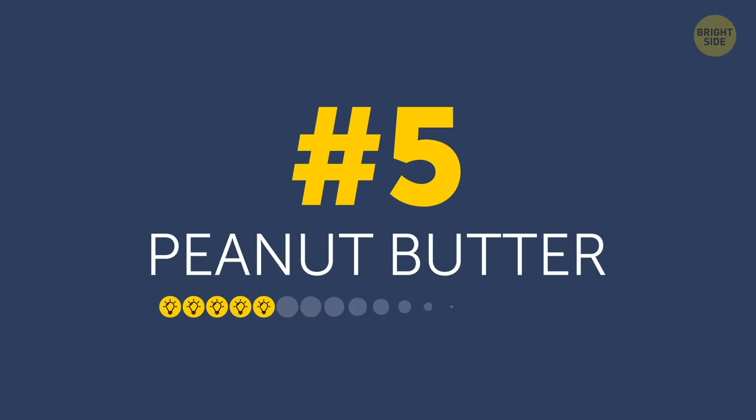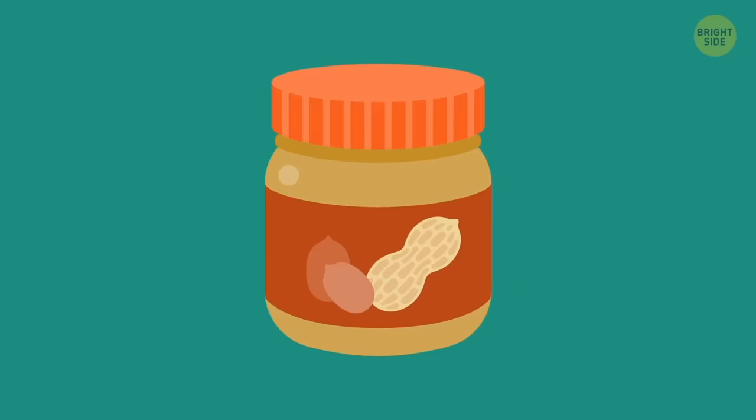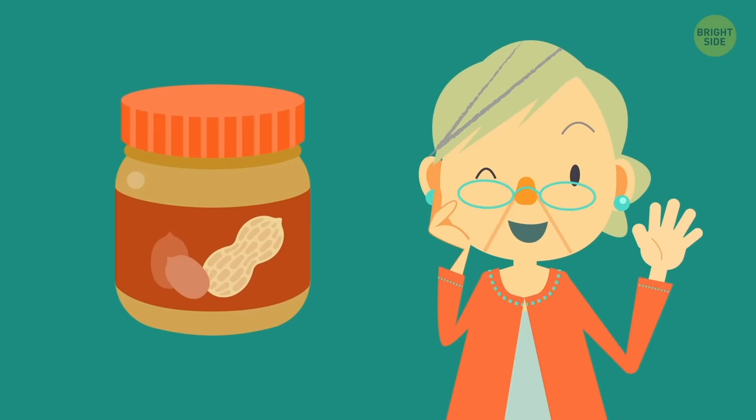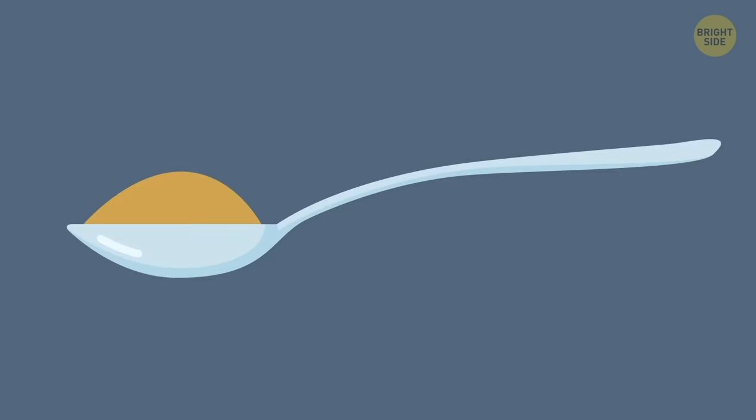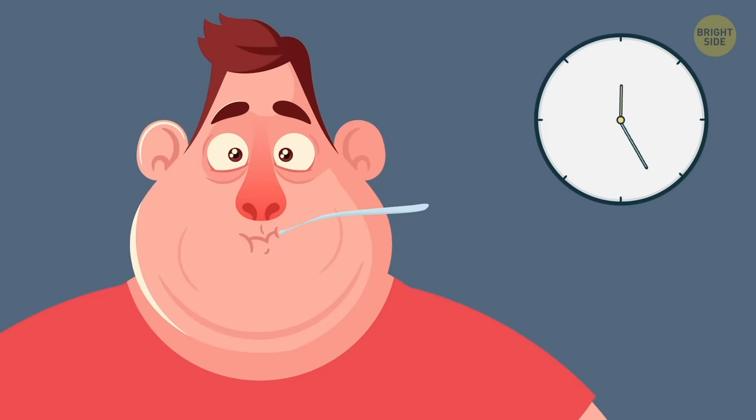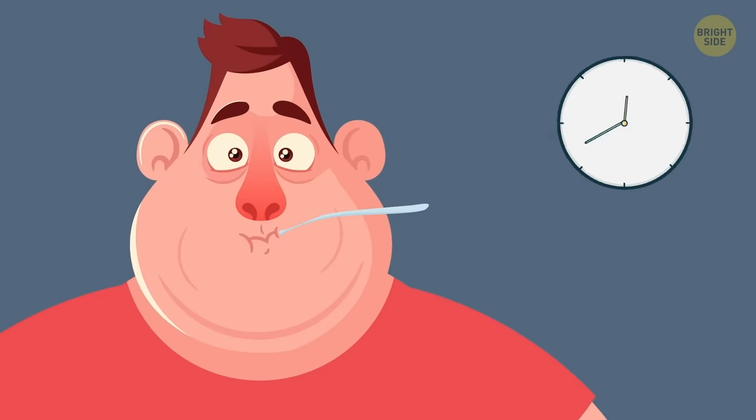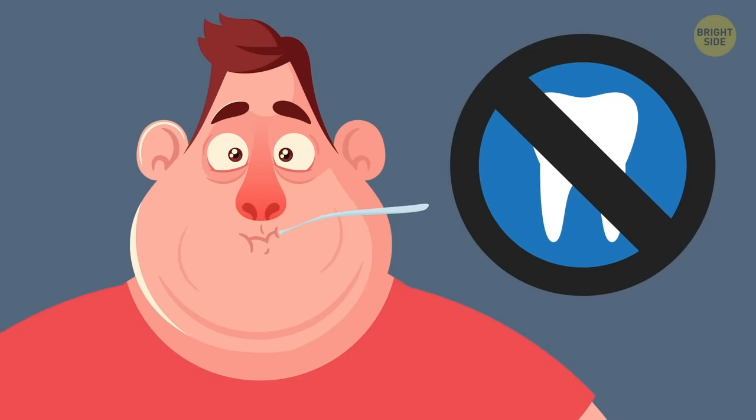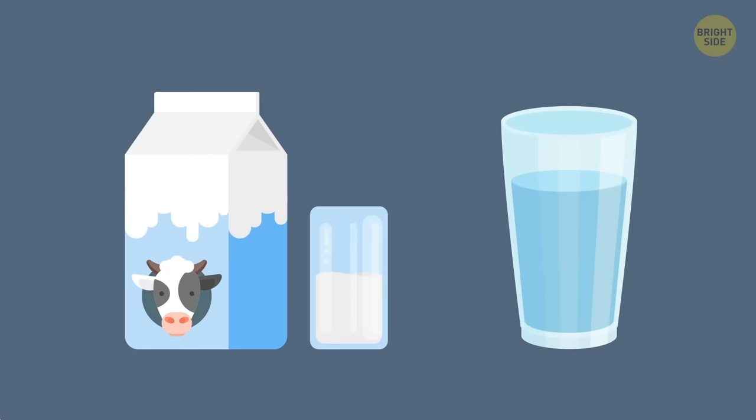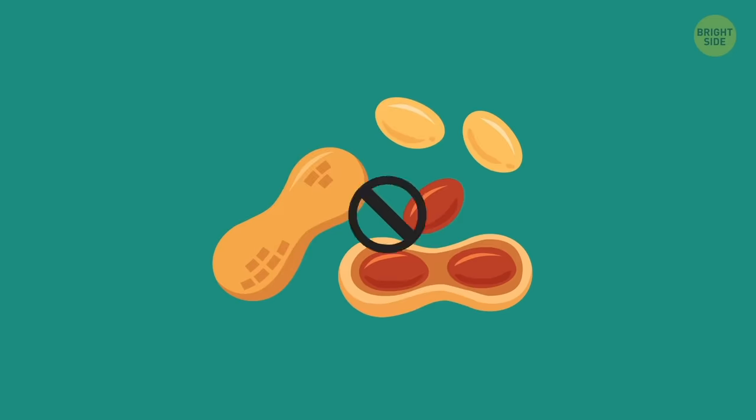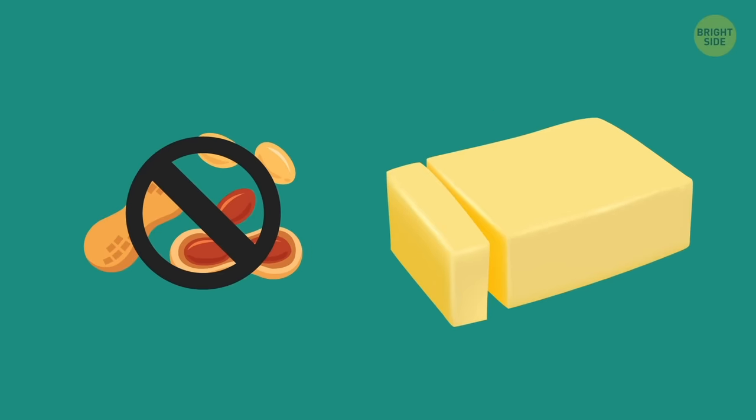Peanut butter. Mmm, delicious! My granny swears by this age-old remedy. Put one teaspoon of peanut butter in your mouth and hold it there. I know it's tempting, but don't chew it. After a few seconds, swallow it. Got milk? If you need to, drink some water. Pro tip! If you have a peanut allergy, almond butter will work too.